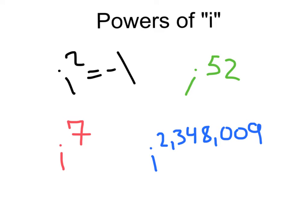Here we are going to discuss simplifying powers of i. Now we know that i squared equals negative 1, but what about i to the 7th? Or i to the 52? Or i to the 2,348,009? Alright, let's slow down for a second.